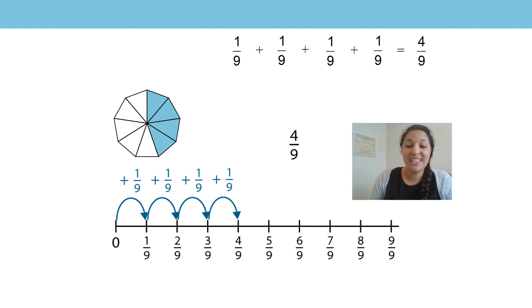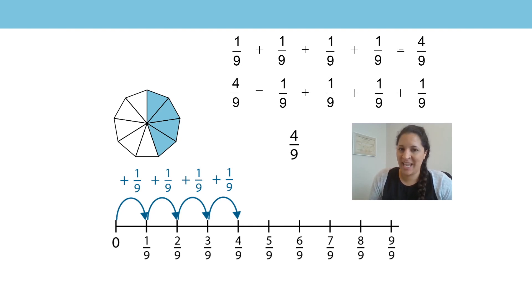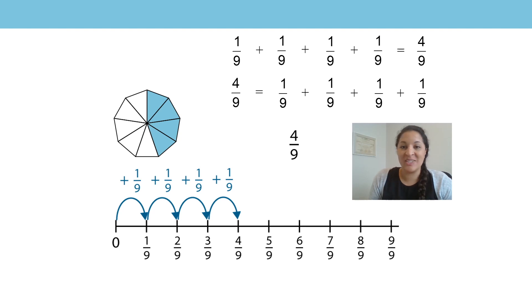There's another way of writing this as an equation: four ninths equals one ninth add one ninth add one ninth add one ninth.